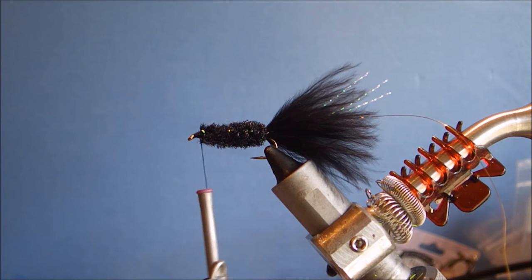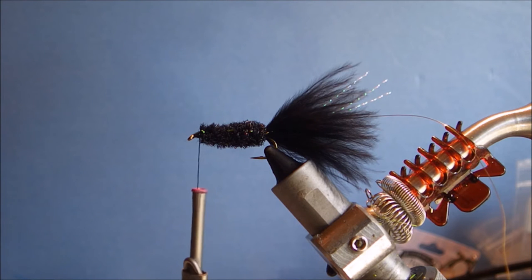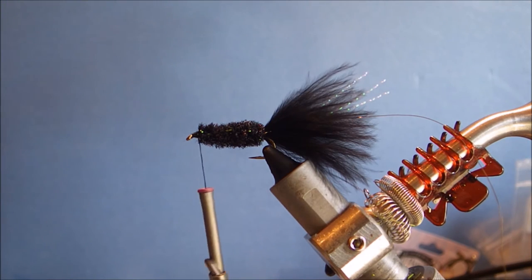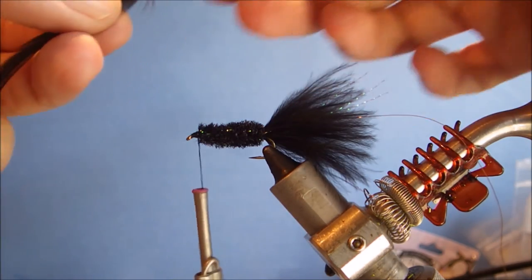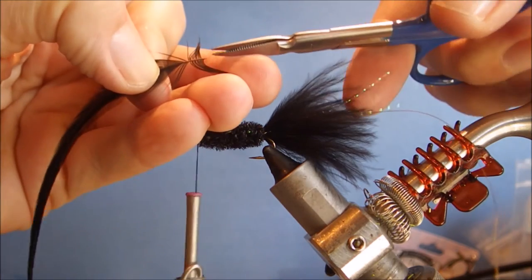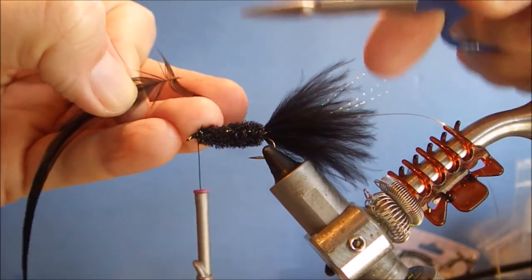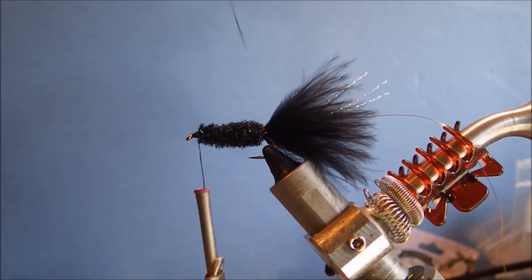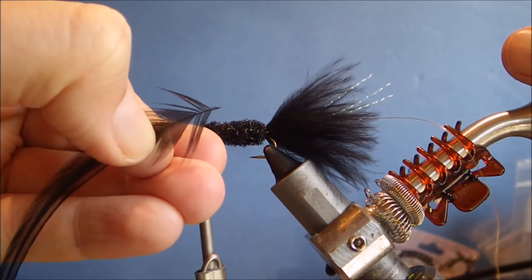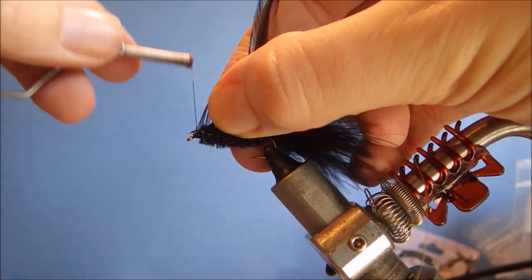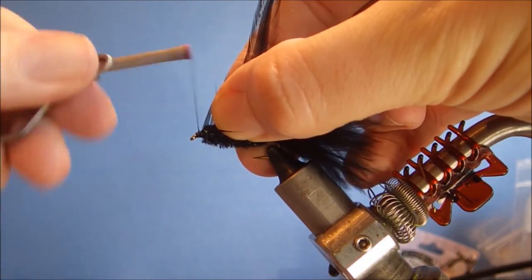I'm using a saddle hackle for the body. You could buy a strung woolly bugger hackle or you could buy the Whiting packs, they're quite nice. I'm just taking all the fluff and rubbish away at the bottom and to help make this really secure, trim away an eighth of an inch of the barbs, just leave wee short sections, very short, just under a millimeter long. That really helps to grip your thread on the stalk when you tie the hackle in.